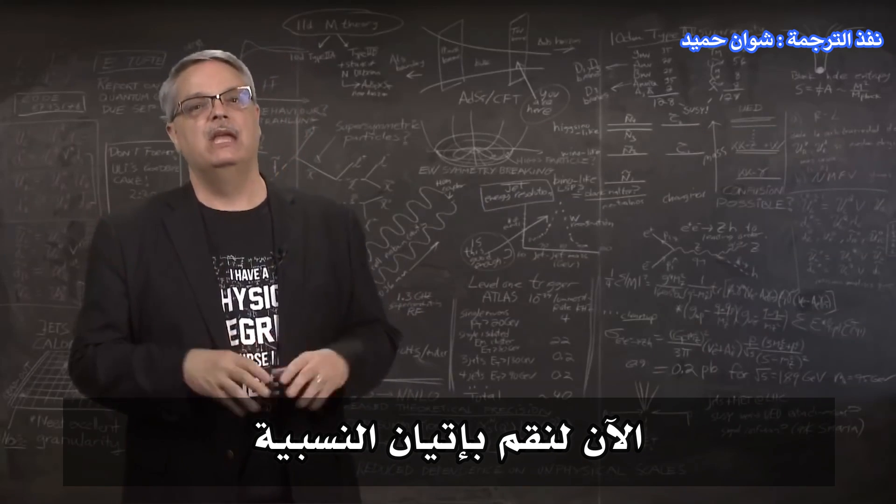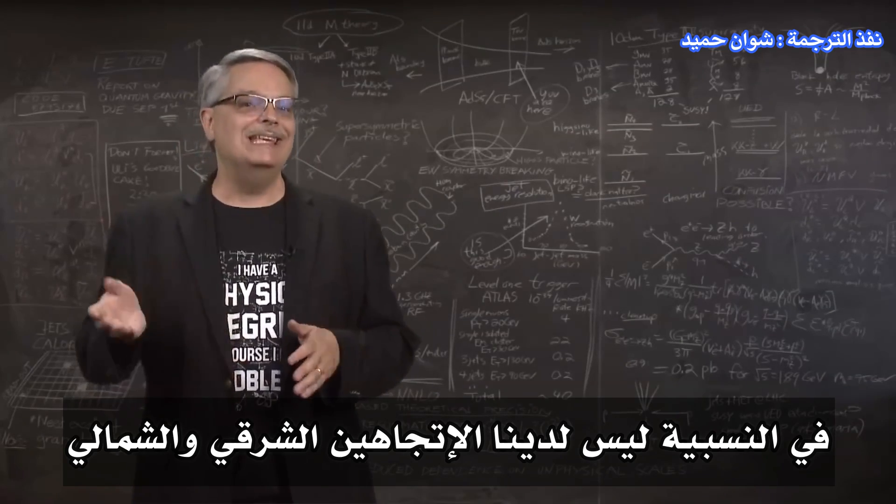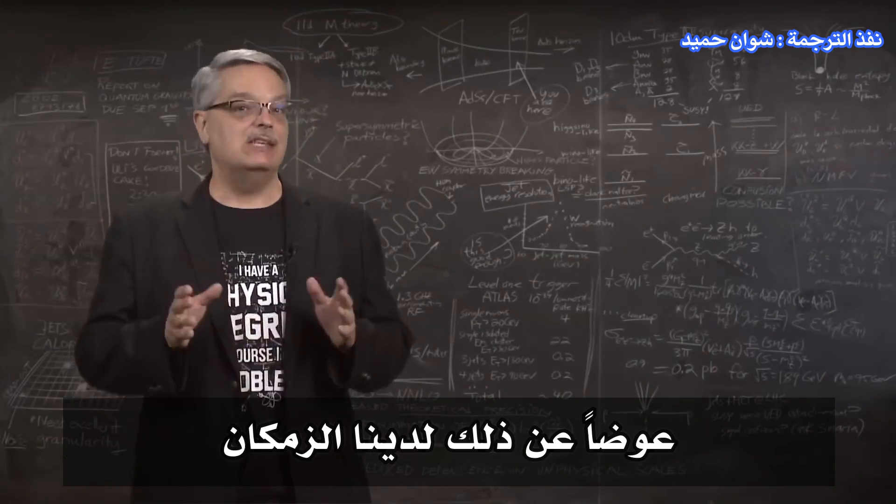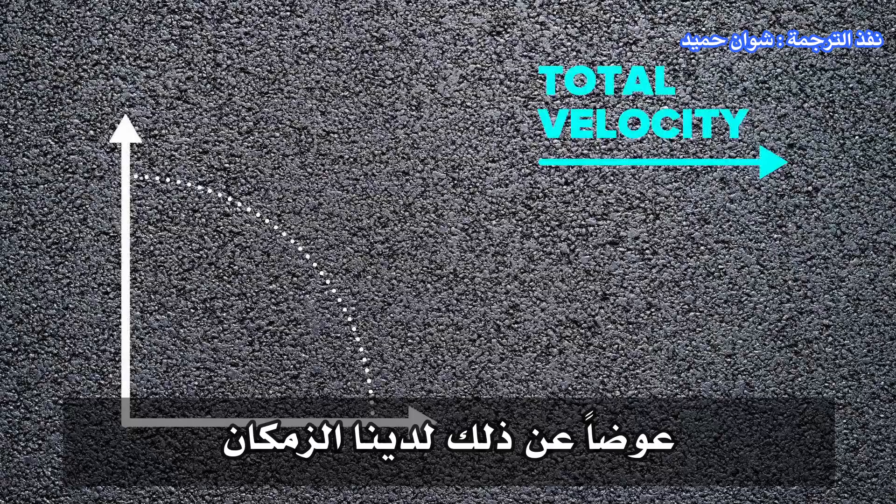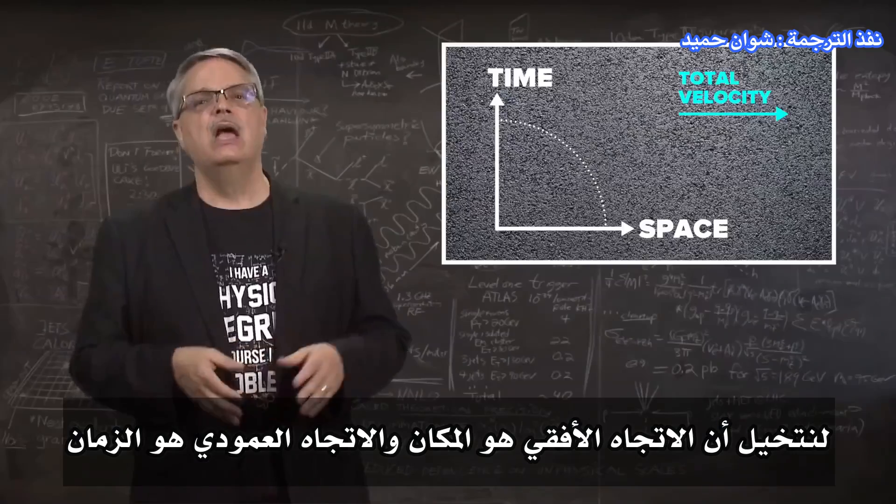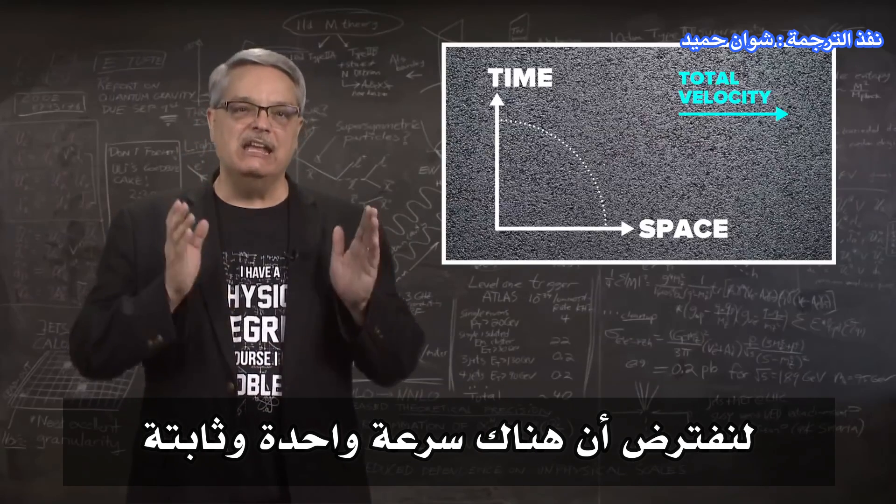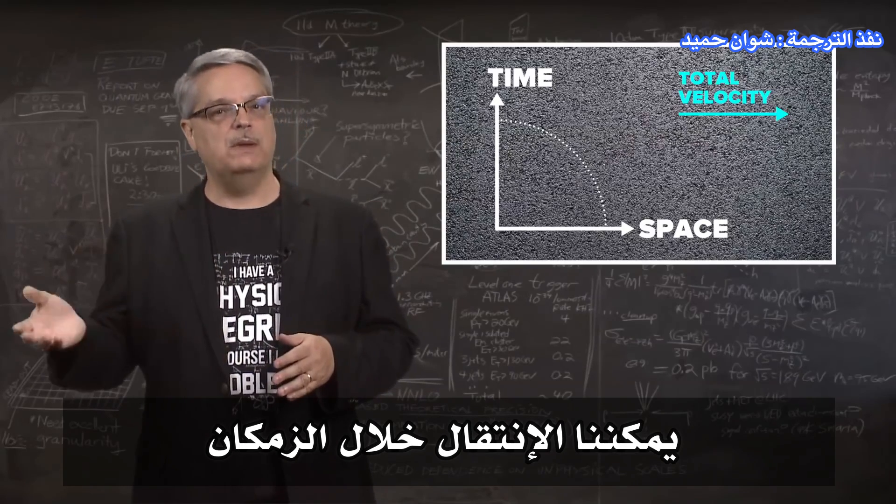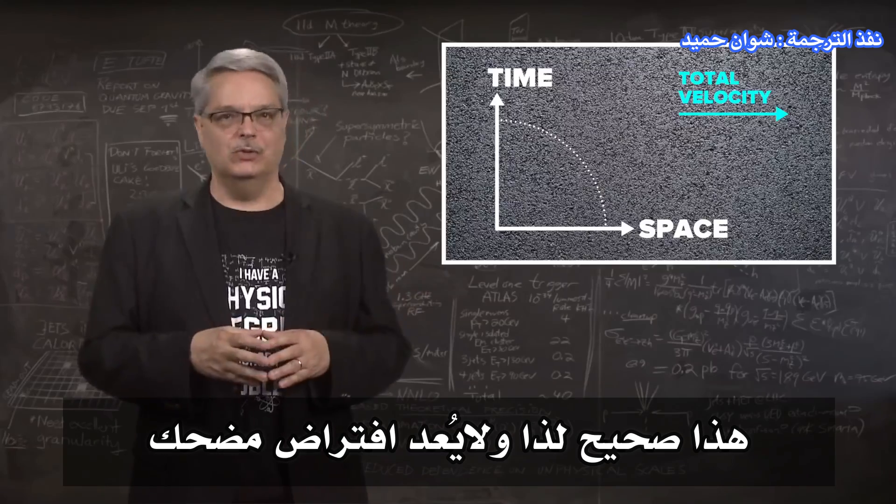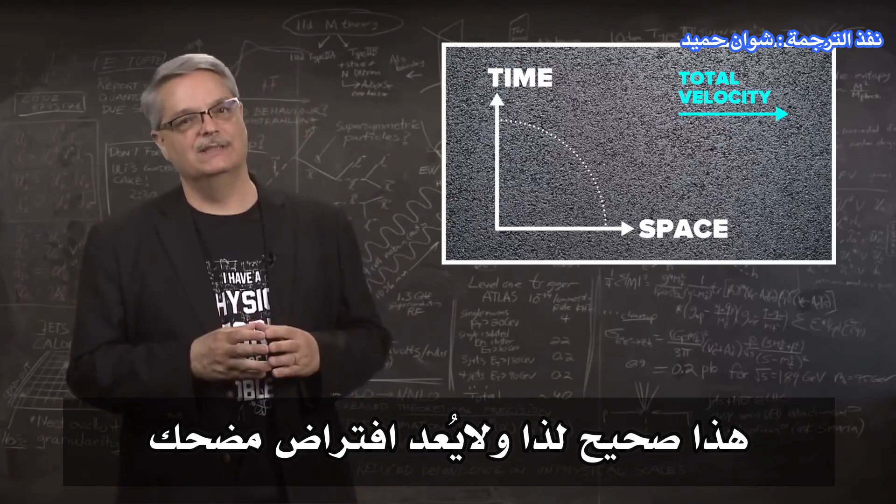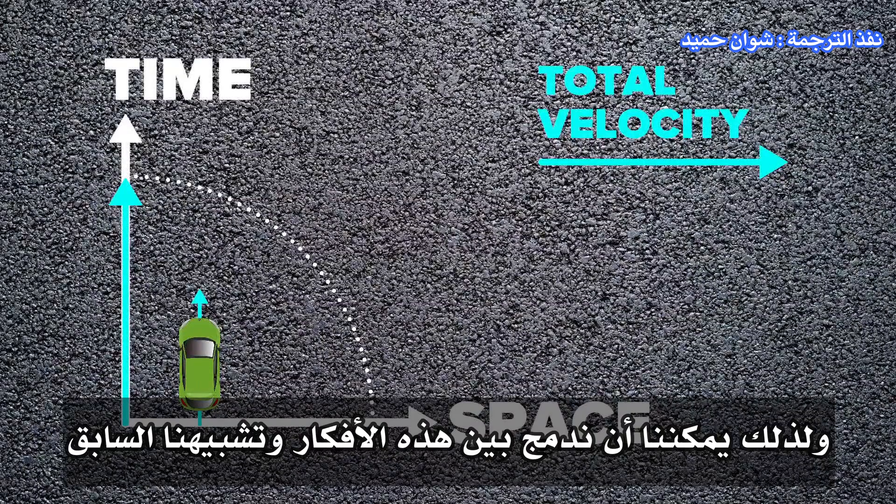Now let's bring in relativity. In relativity, we don't have east and north directions. Instead, we have space-time. Let's imagine the horizontal direction is space and the vertical direction is time. Suppose there's a single and fixed speed we can travel through space-time. This happens to be true.